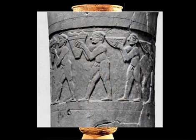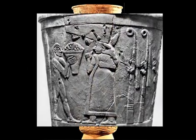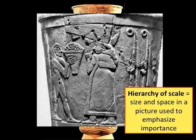The middle register depicts men carrying jars of offerings of nature's bounty. The top register shows the goddess with a tall horned headdress. Notice that the men in the carving are smaller than her. This is called hierarchy of scale. Hierarchy of scale is when size and space in a picture are used to emphasize the importance of a specific object. Because the goddess is larger, it shows that she is more important than the men.